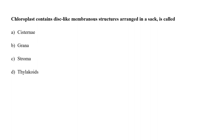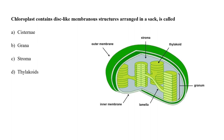Chloroplast contains disc-like membranous structures arranged in a sac. It is called A. System, B. Grana, C. Stroma, or D. Thylakoids? Referring to a diagram of chloroplast structure, the disc-like membranous structures are called thylakoids. Stacks of thylakoids are called grana. So the correct answer is option B, and the disc-like membranous structures are called thylakoids.